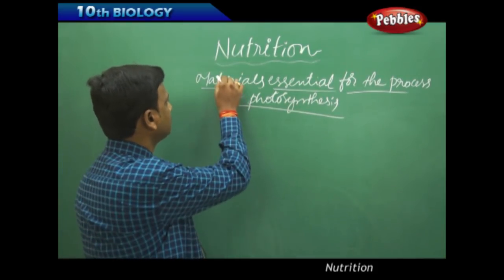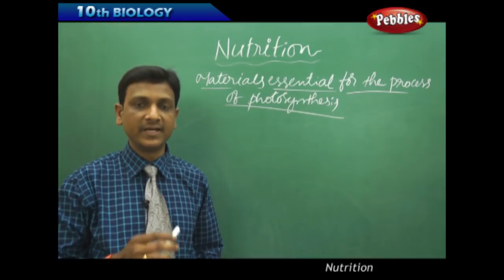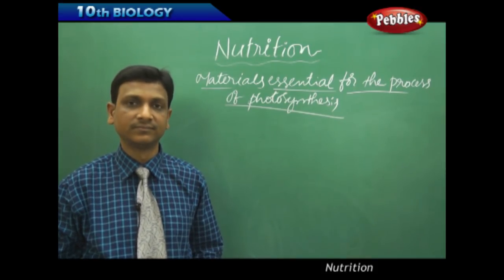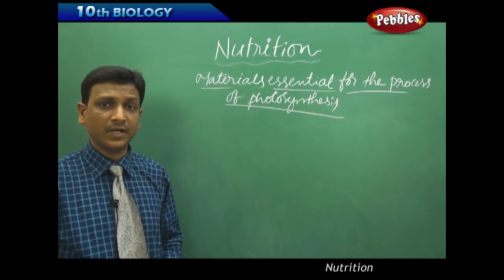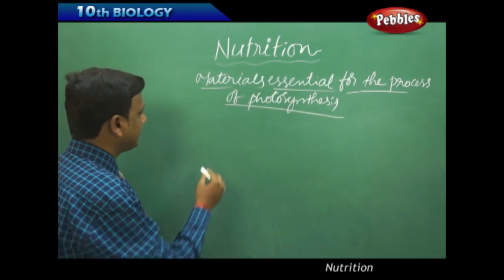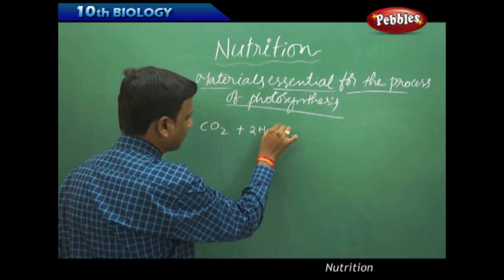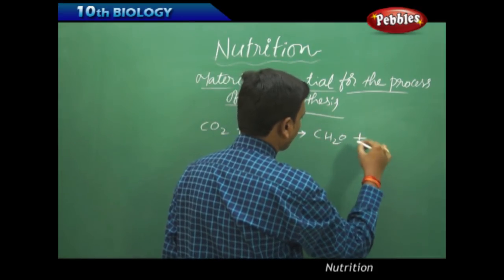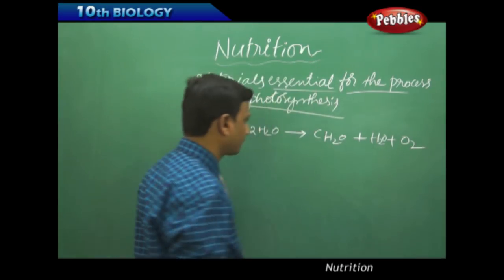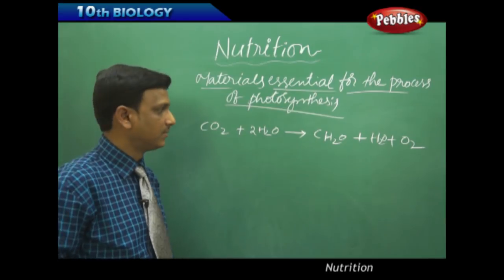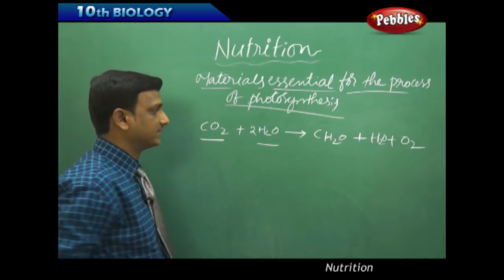What are the materials essential for the process of photosynthesis? It took nearly 300 years to find out the various materials that are necessary. If we look at the equation given by Van Neel: carbon dioxide plus two water molecules gives rise to glucose plus water plus oxygen. By looking at this equation we can understand the required materials — carbon dioxide and water. These are the two chief materials.